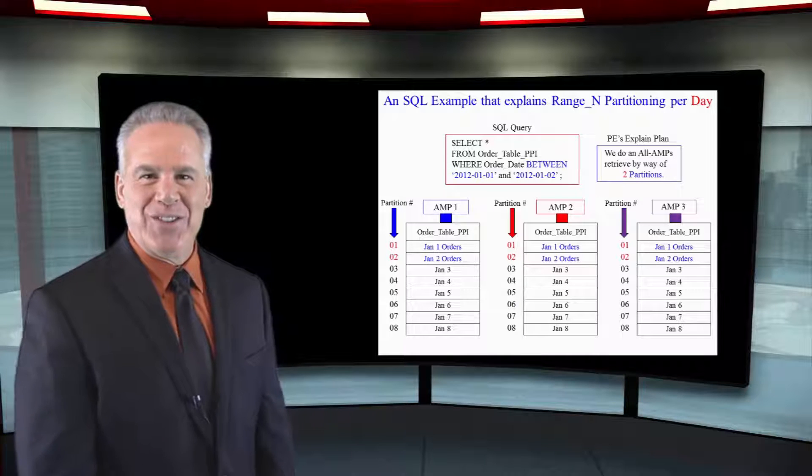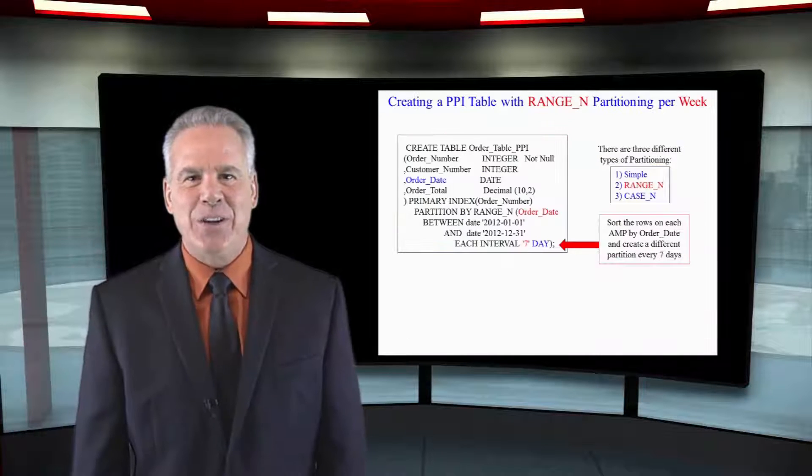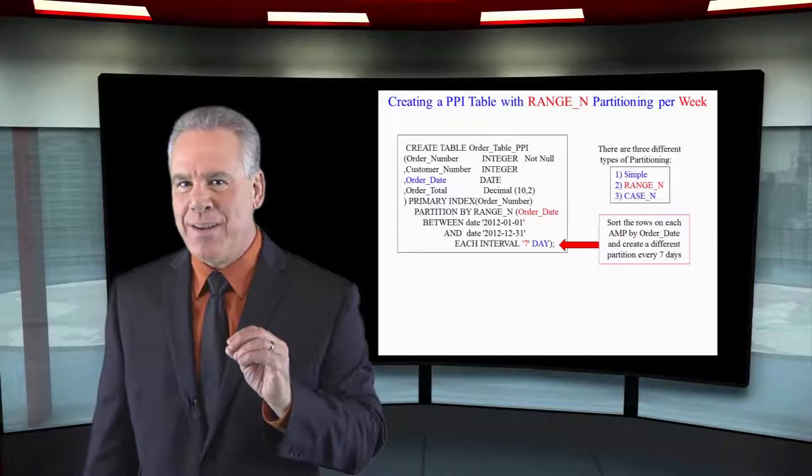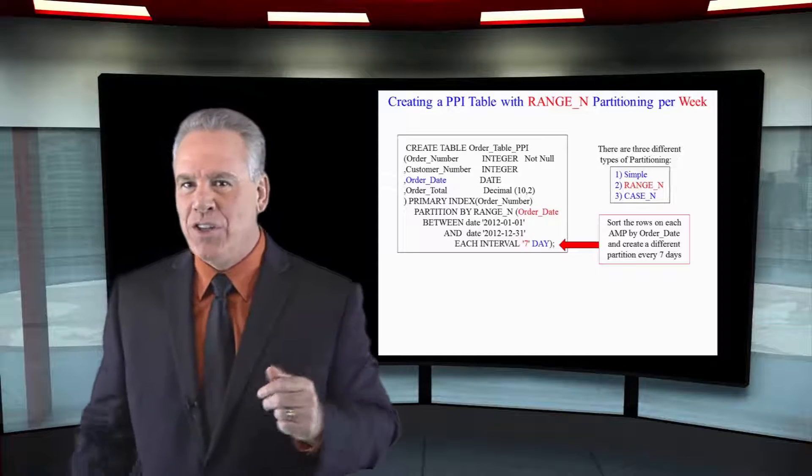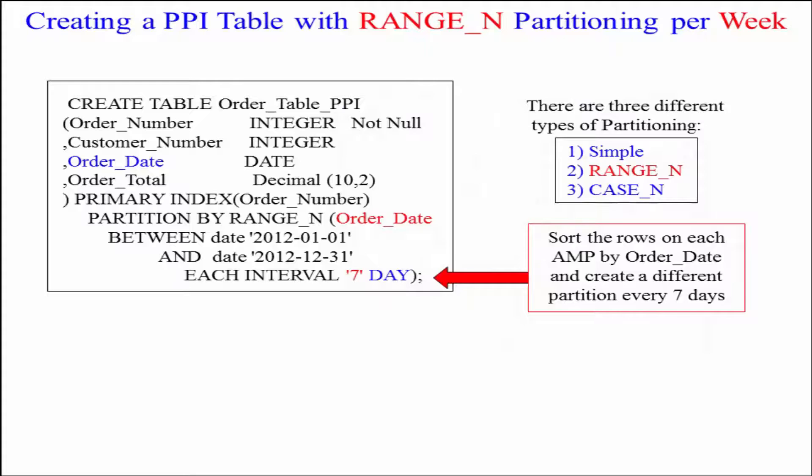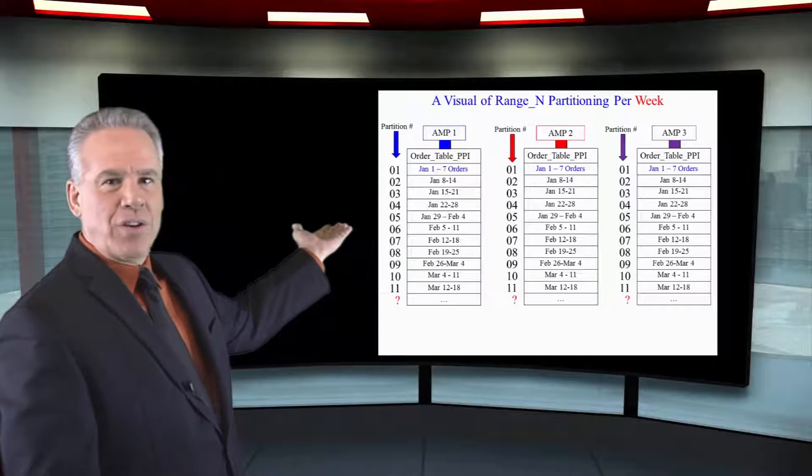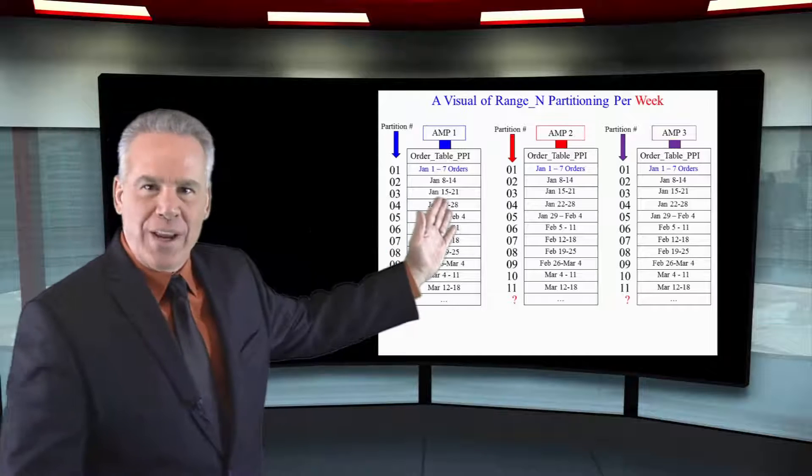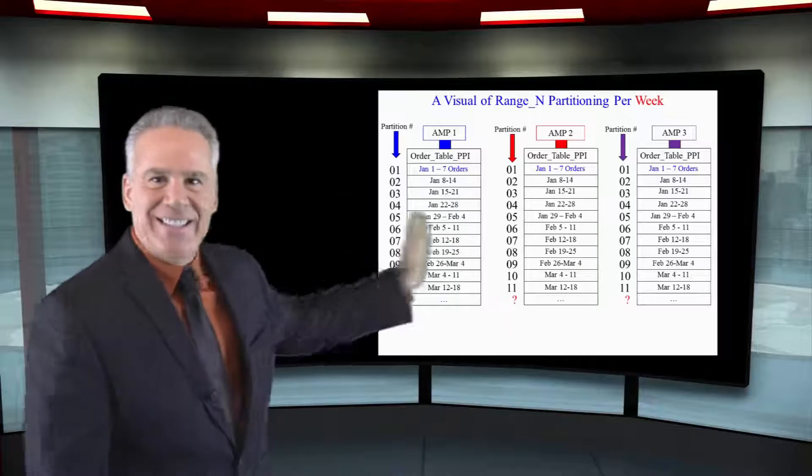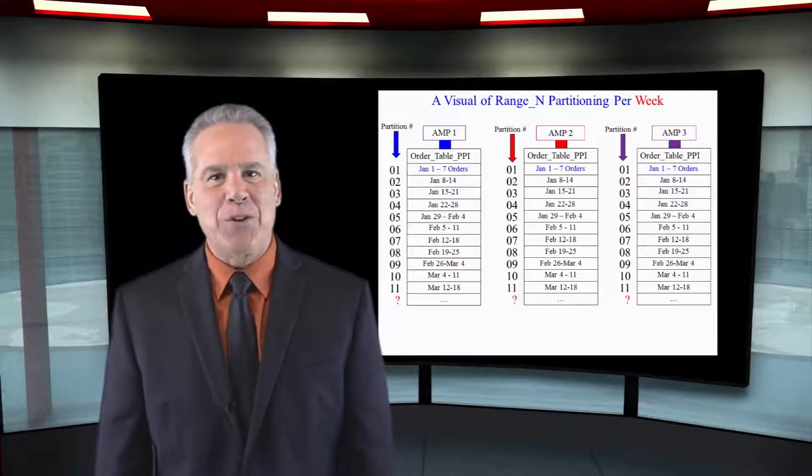Take a look at this partitioning statement. We're actually partitioning again RANGE_N on Order_Date, each interval seven days. You know seven days of work makes one week, we partitioned by the week. As you can see, in partition one that's the first week, partition two that's the second week, and that's how it's going to work.